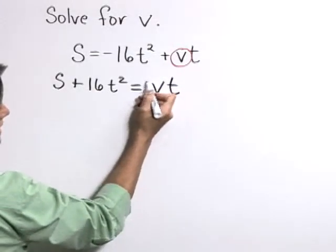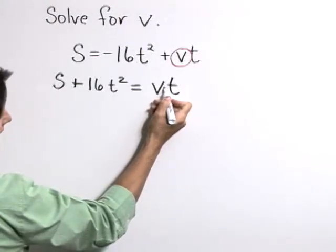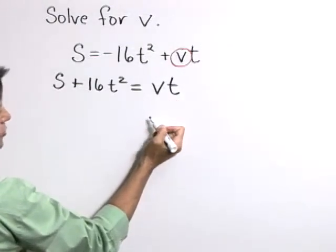And again, here's what we want to isolate, this value of v. This is multiplication. We undo multiplication with division.